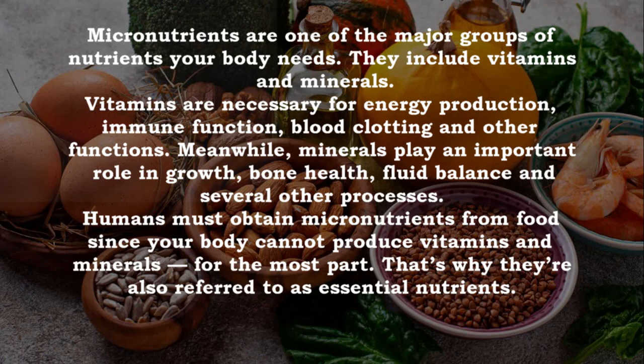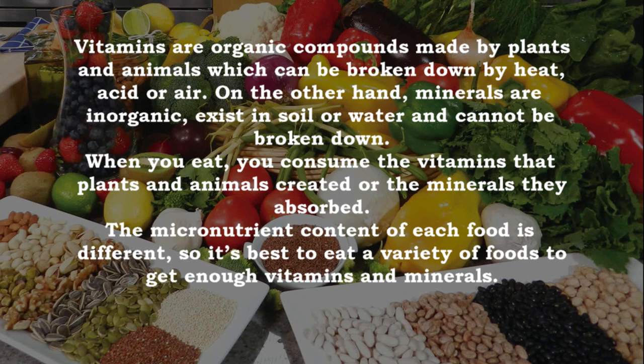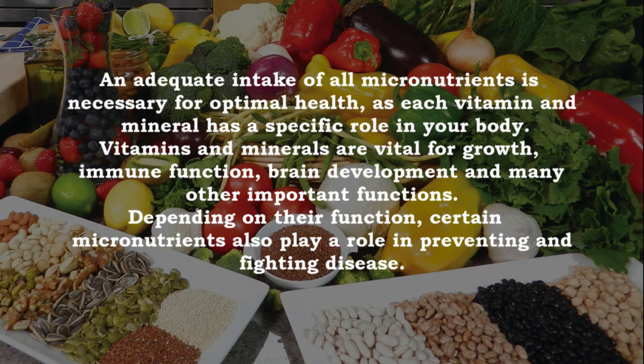For the most part, that's why they're also referred to as essential nutrients. Vitamins are organic compounds made by plants and animals, which can be broken down by heat, acid, or air. Minerals are inorganic, exist in soil or water, and cannot be broken down. When you eat, you consume the vitamins that plants and animals created or the minerals they absorbed. The micronutrient content of each food is different, so it's best to eat a variety of foods to get enough vitamins and minerals.